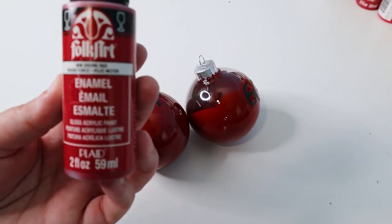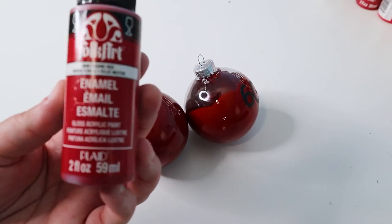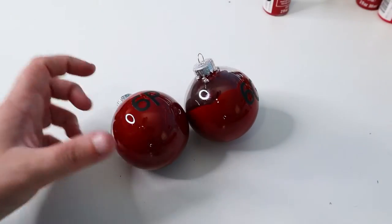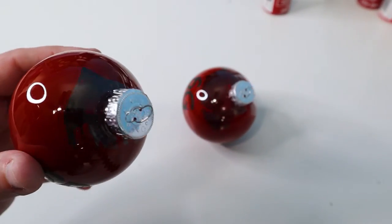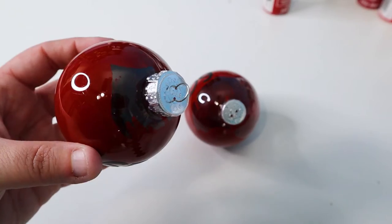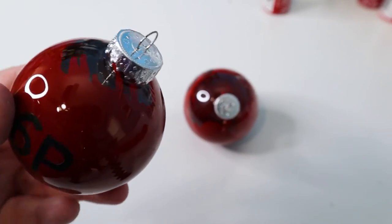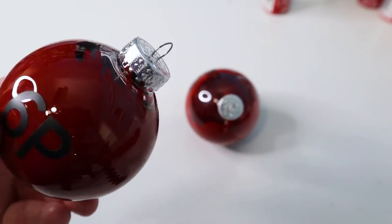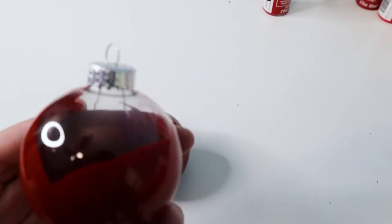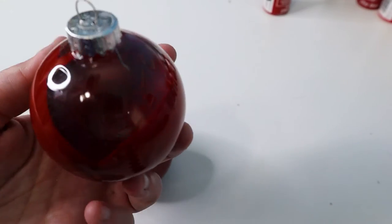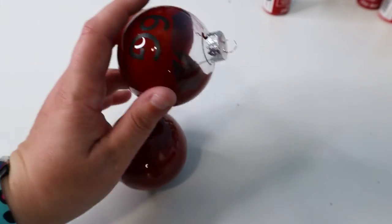Number six is FolkArt Enamel in engine red. This one is a gloss and I've got it on plastic and glass. And I will say that it never fully covered these very well. It was almost too thick. And you can see that we still have a lot of coverage issues at the tops of these ornaments, both glass and plastic. And the glass one is really, really bad with the coverage. So I would say these are both a no for me.